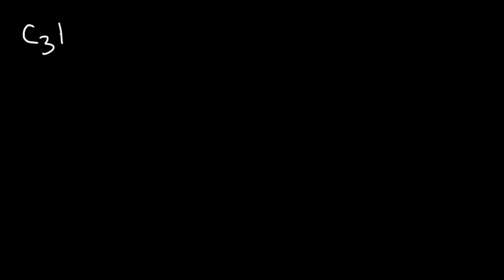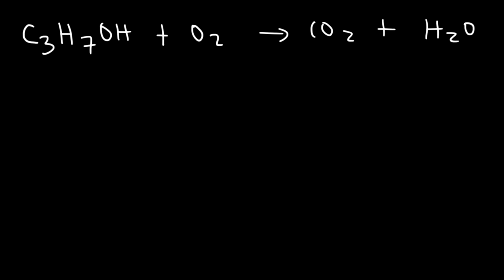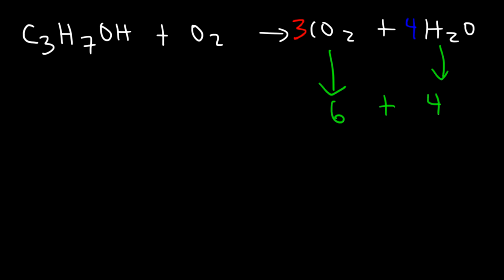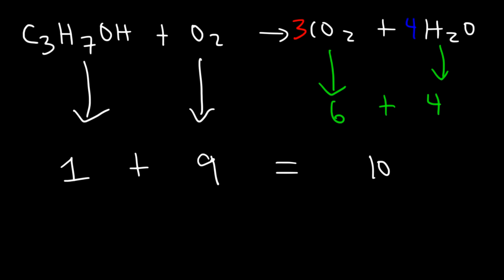This is the last example of the video. We have propanol, and we're going to react it with oxygen to produce carbon dioxide and water. We have 3 carbon atoms on the left, so we put a 3 in front of CO₂. We have a total of 8 hydrogen atoms (7 plus 1), and 8 divided by 2 is 4, so we put a 4 in front of H₂O. On the right: 6 oxygen in the CO₂ (3 times 2) and 4 in the water molecules — 6 plus 4 is 10. Since propanol has 1 oxygen, we need 9 more from O₂, giving 9 over 2.